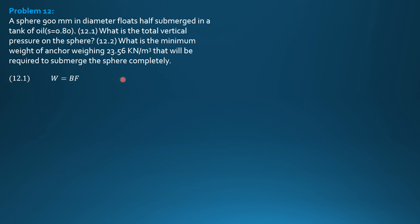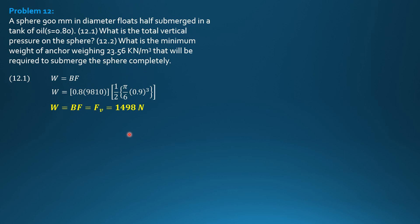For part one, weight equals buoyant force, which is also the total vertical pressure on the sphere. Since the sphere is half submerged, the volume considered is one half of pi over 6 times diameter cubed, or two-thirds pi r cubed. So weight equals specific weight of oil 0.8 times 9810 newtons per cubic meter times one half of pi over 6 times 0.9 cubed, where radius is 0.45. This gives 1685 newtons.